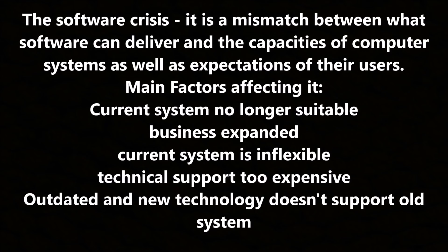Our first topic will be the software crisis. The software crisis is a mismatch between what the software can deliver and the capacities of the computer system as well as the expectations of their users. The main factors affecting it are: the current system is no longer suitable, the business has expanded, the current system is inflexible, technical support is too expensive or outdated, and new technology doesn't support the old system.